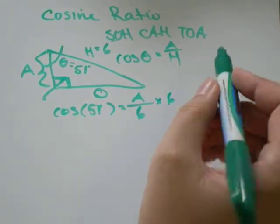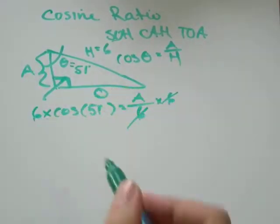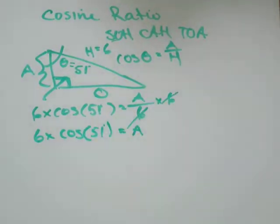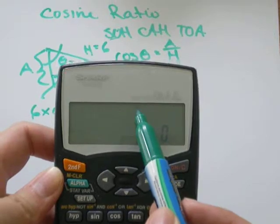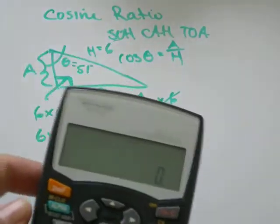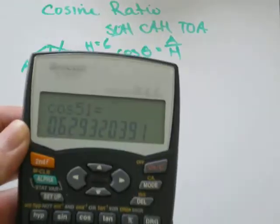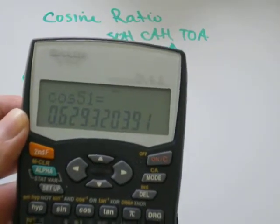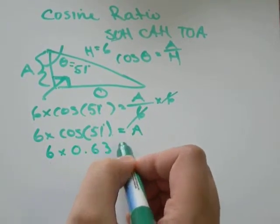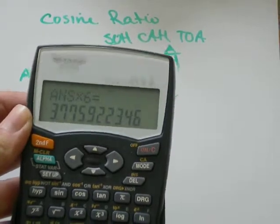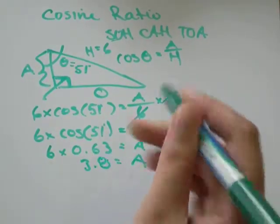To get rid of this 6, all I need to do is multiply by 6. And those will cancel out. Do the same thing to the other side. And I'll get adjacent equals 6 times cosine of 51. So cos of 51 is just going to be some decimal number. You need to make sure your calculator is in degree mode. On my calculator it says DEG in tiny little letters. So all I'm going to do is type in cos 51 on my calculator and see what decimal I get. So I get about 0.63. So I'll say 6 times 0.63 equals the length of the adjacent side. I'll take that number, multiply it by 6, and I'll get 3.8 equals my adjacent side.